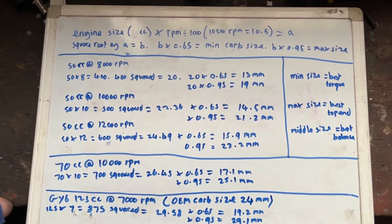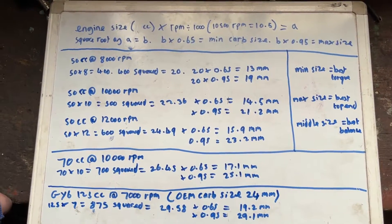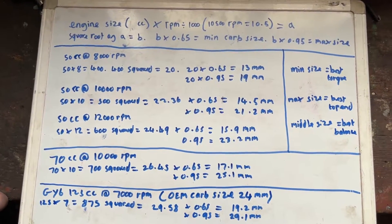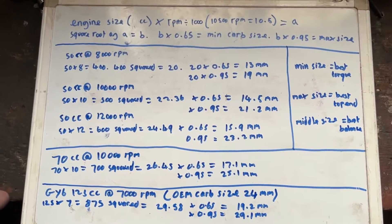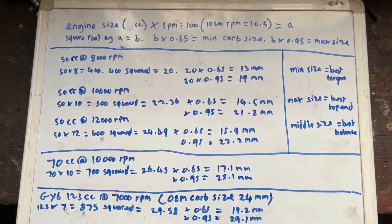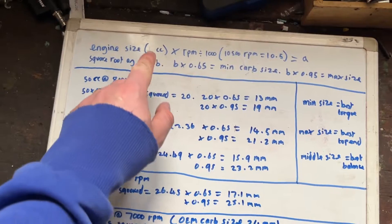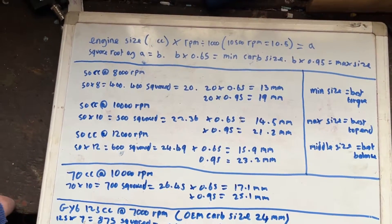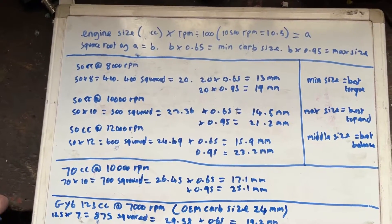The second thing we need to know is what RPM that engine can rev to because it's quite important for the calculation. Now I should say that there is a little bit of leniency in this calculation. It is possible to be very slightly out in your initial inputs and still get the correct carb size.